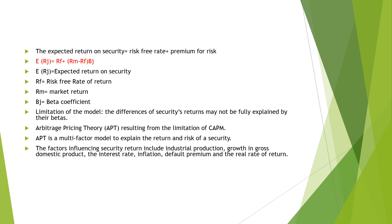The multi-factor model is Arbitrage Pricing Theory. The factors in this multi-factor model include industrial production, growth in gross domestic product, interest rate, inflation, default premium, and real rate of return — multiple factors which explain the return and risk of security in Arbitrage Pricing Theory.